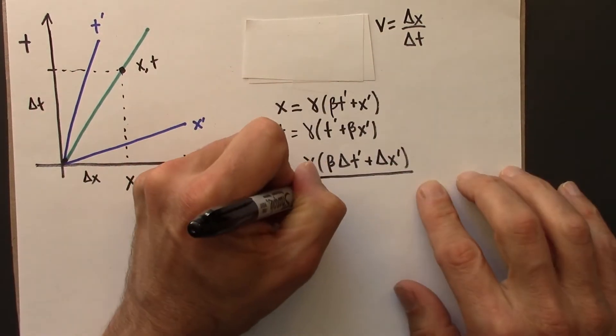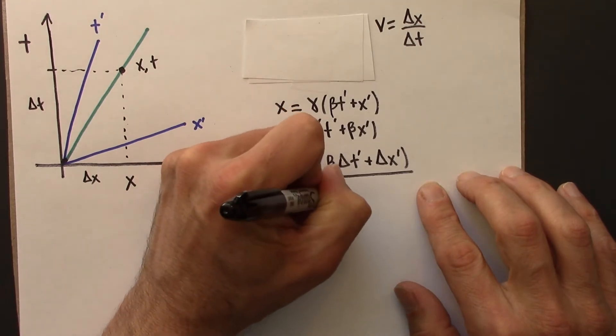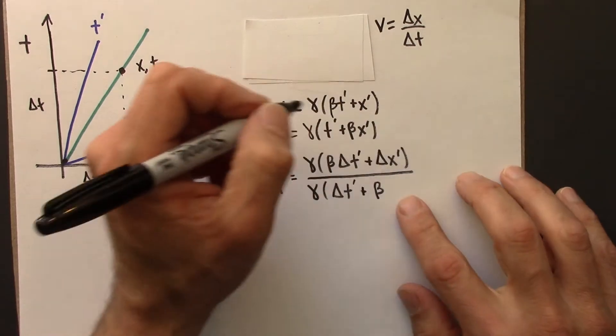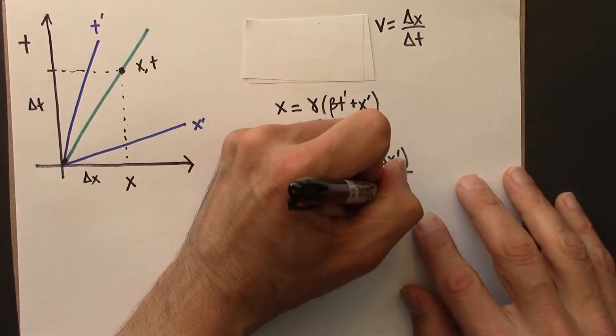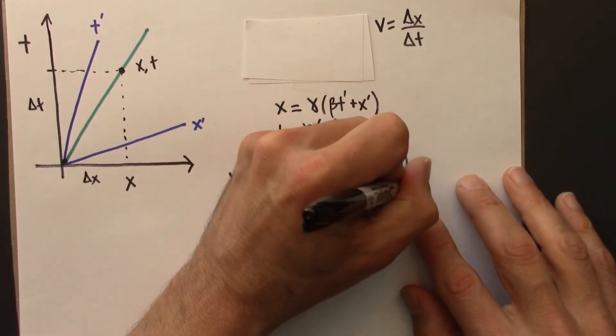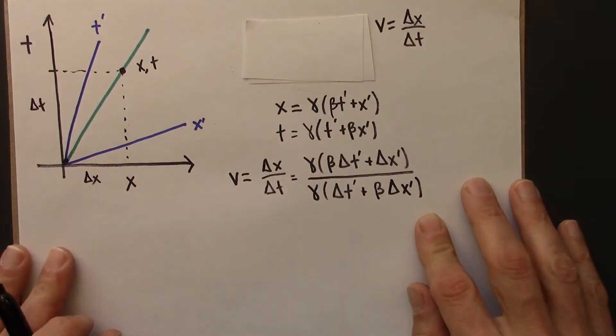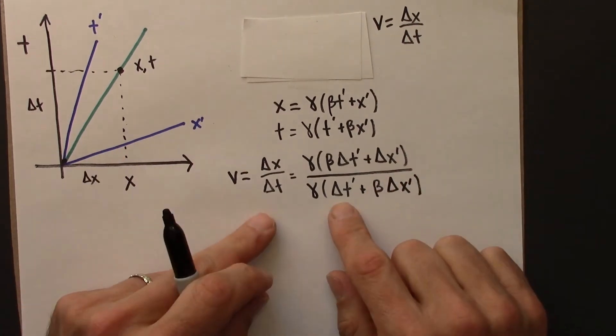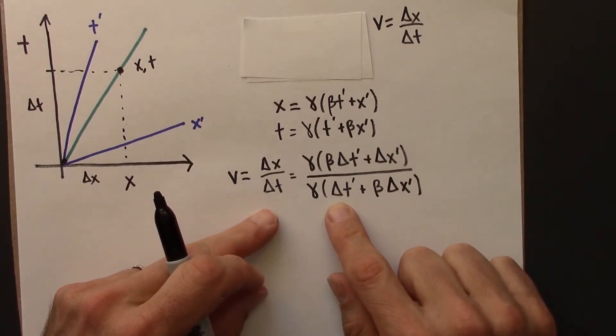And t is just this, gamma delta t prime, plus beta delta x prime. Alright. So there it is. That's a formula. We're going to do just a little bit of algebra to get this into a more useful form.